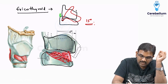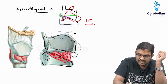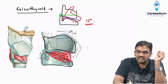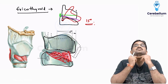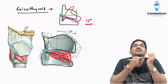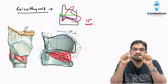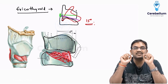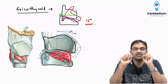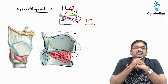The vocal cord is attached here from the arytenoids. Now what is happening - the vocal cord is getting stretched. The vocal cord lying horizontally is being pulled anteriorly with the help of the cricothyroid muscle, so the vocal cord gets tensed with the help of cricothyroid.